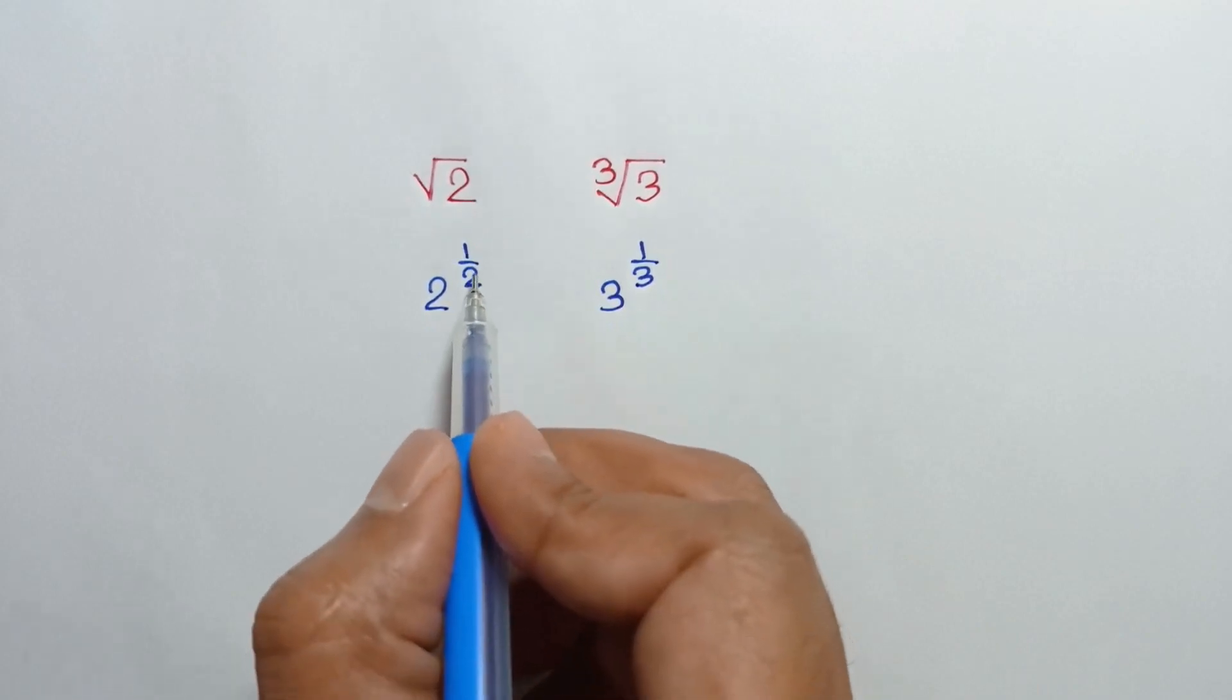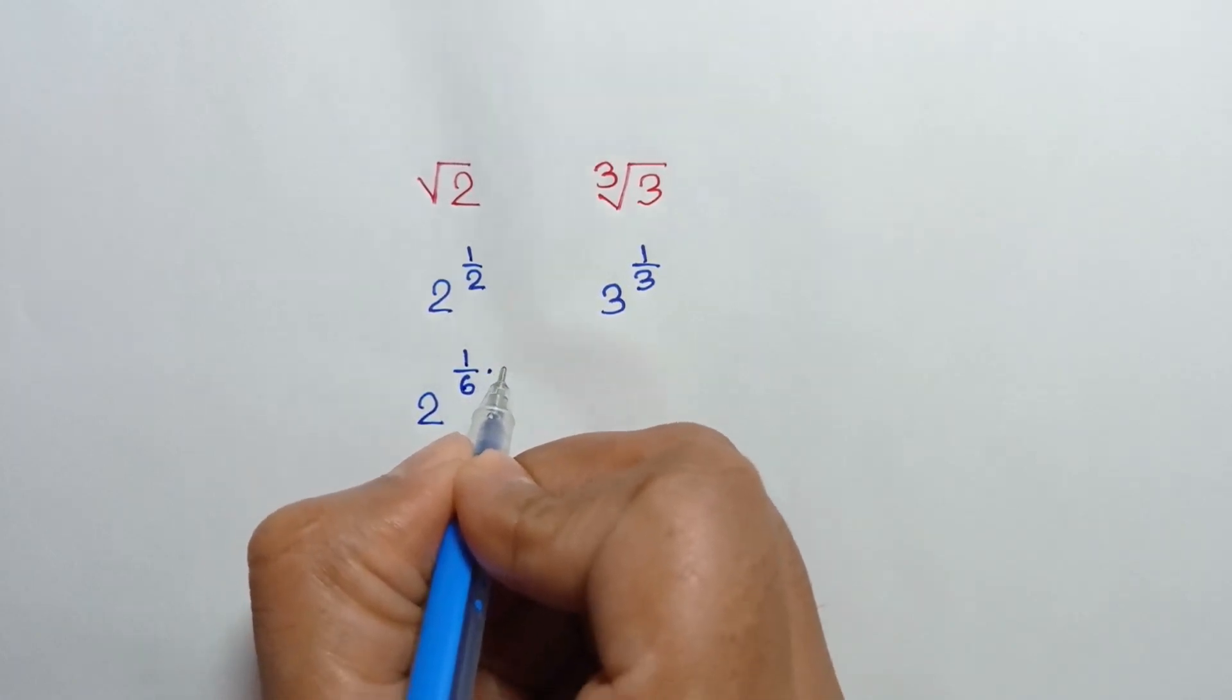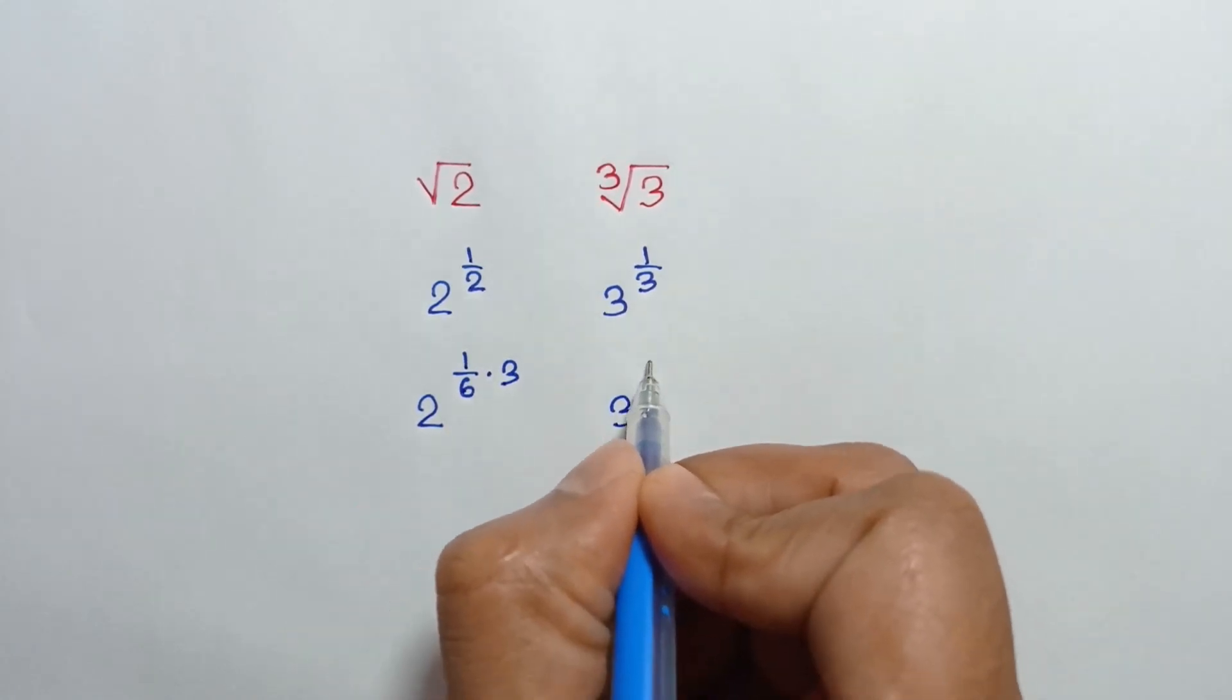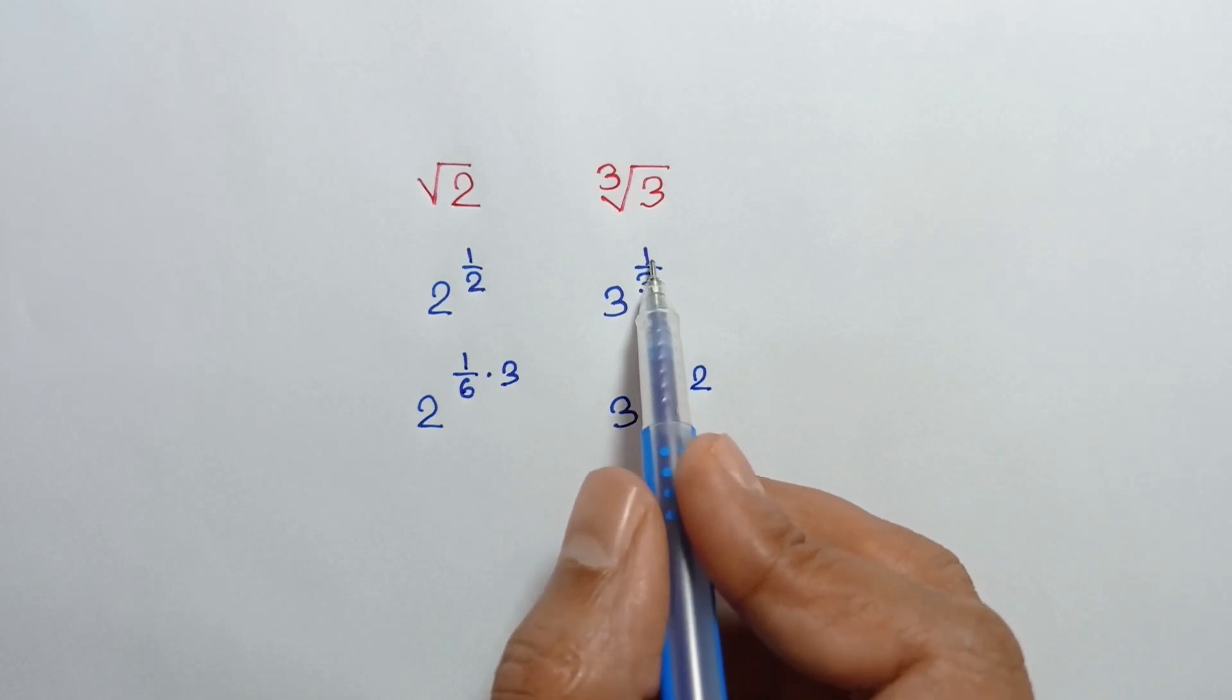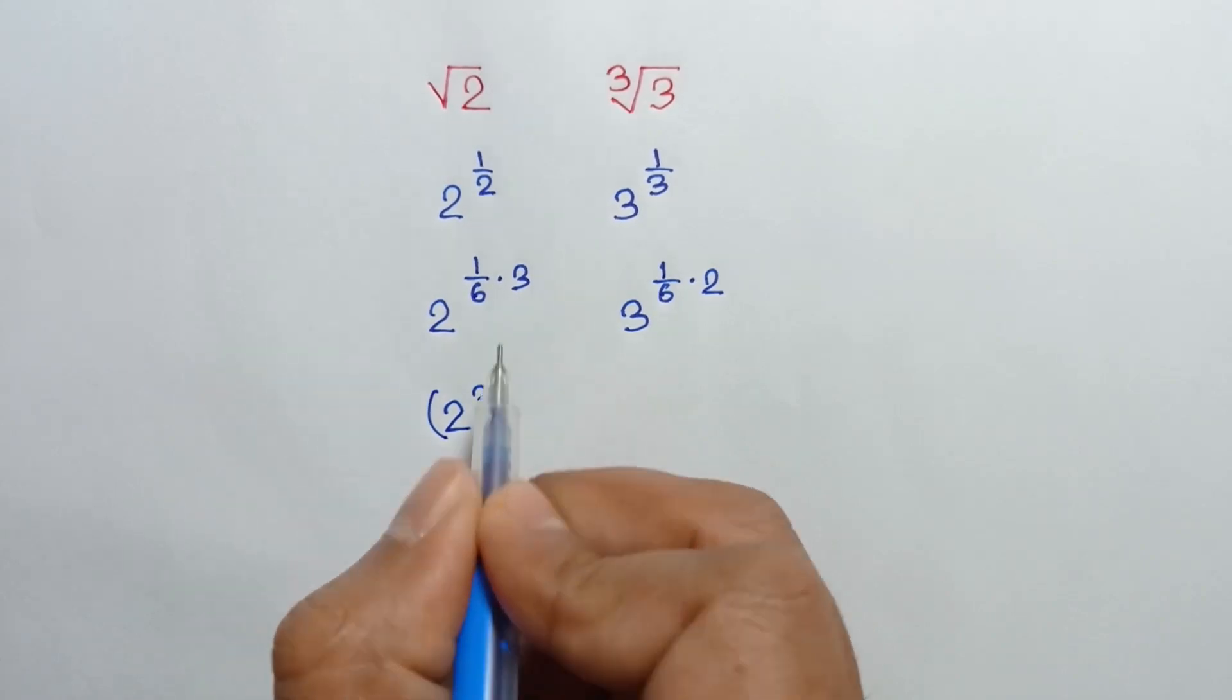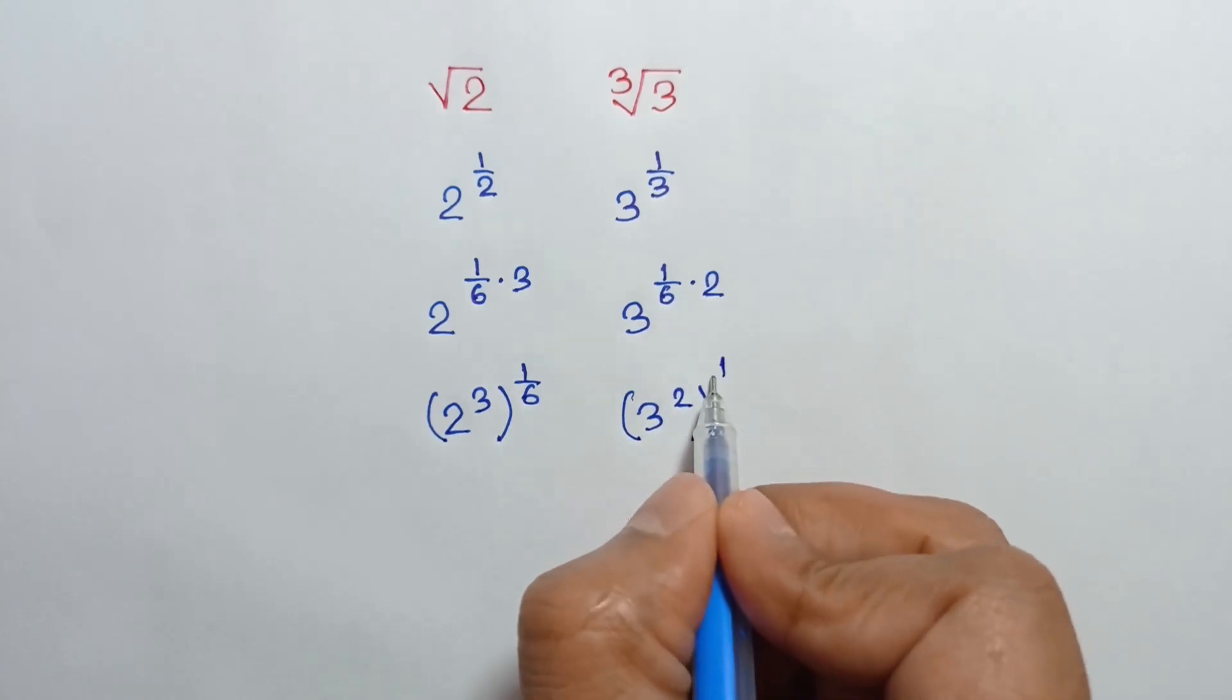Now the LCM of 2 and 3 is 6, so 2 to the power 1 over 6 times 3. This 1 over 6 times 3 is 1 over 2, and this 3 to the power 1 over 6 times 2. This 1 over 6 times 2 is 1 over 3, or 2 to the power 3 whole to the power 1 over 6, and this can be written as 3 square whole to the power 1 over 6.